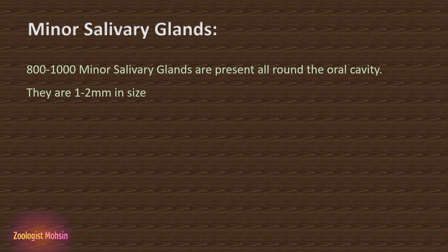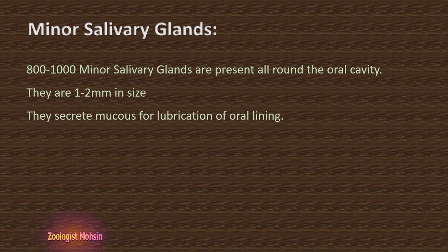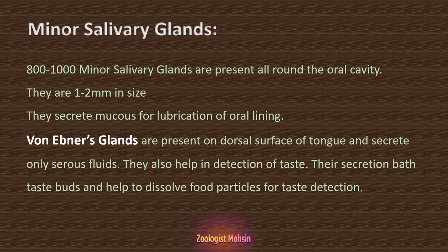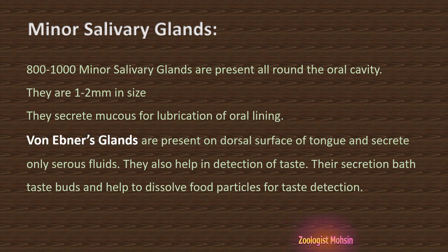Now let's look at minor salivary glands. 800–1000 minor salivary glands are present all around the oral cavity. They are usually 1–2 mm in size and secrete mucus for lubrication of the oral lining; they do not secrete serous fluids. Another very important name to remember is von Ebner's glands. They are present on the dorsal surface of the tongue and secrete only serous fluids. They help in detection of taste — their secretion bathes the taste buds and helps dissolve food particles for taste detection. Von Ebner's glands appear frequently in past exam papers, so remember them.